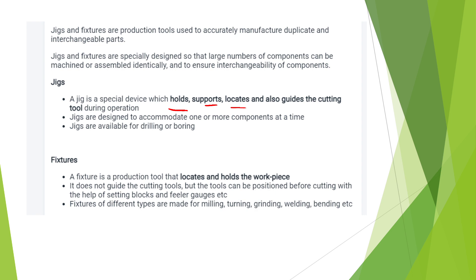For drilling or boring, use a jig. It is a production tool that locates the workpiece. If you have a cutting tool, you can use it. If you have a setting block or filler gauge, you can use a fixture. Different types are available. Fixtures are mainly used for milling, turning, grinding, welding, and bending.